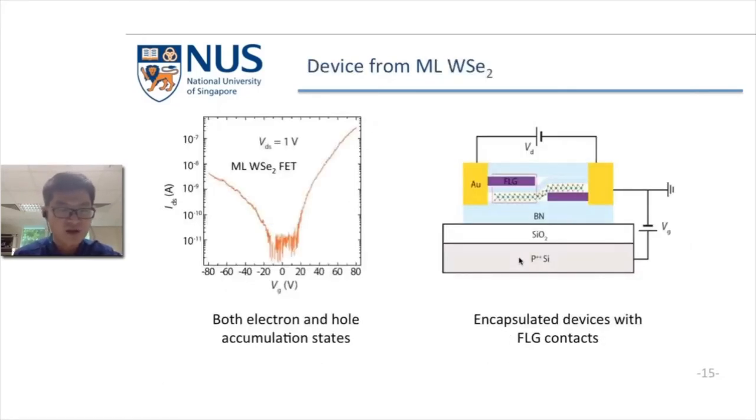To address this problem, we first chose monolayer tungsten diselenide as the material because it has both electron and hole accumulation states, so we can control positive trion and negative trion conditions. Then we fabricated the MIS device, but here we use graphene contact to the tungsten diselenide, and we also encapsulate the MIS structure in boron nitride to improve device stability.